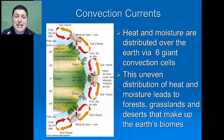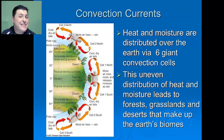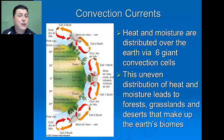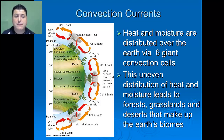Heat and moisture is distributed over six giant convection cells. This uneven distribution of heat and moisture actually leads to the forests, grasslands, and deserts that make up all of the Earth's various biomes.